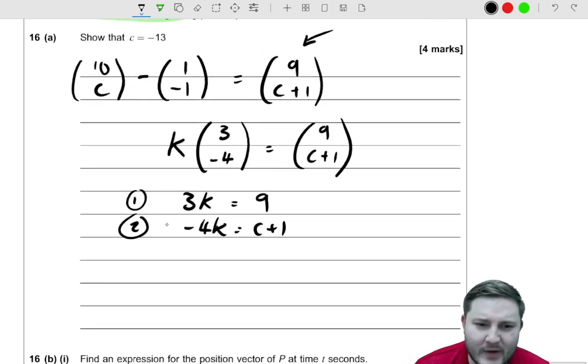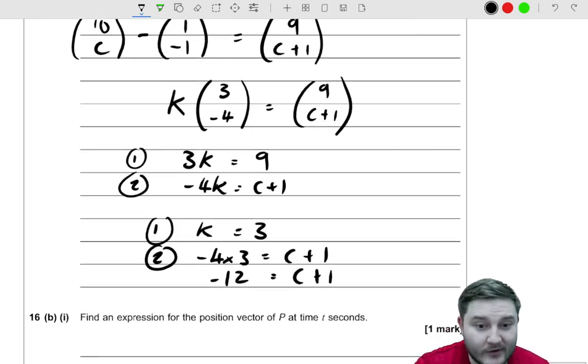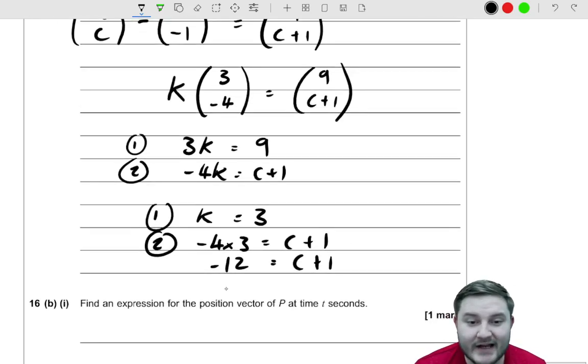Well, clearly from that first equation, it can be implied that k must equal 3, because 3k is equal to 9, so k must be 3. And if I know that k is 3, then I can just sub into the second equation. So I get -4 times 3 is equal to c + 1. So -12 is equal to c + 1, or in other words, by subtracting 1 from both sides, c is equal to -13, as required.